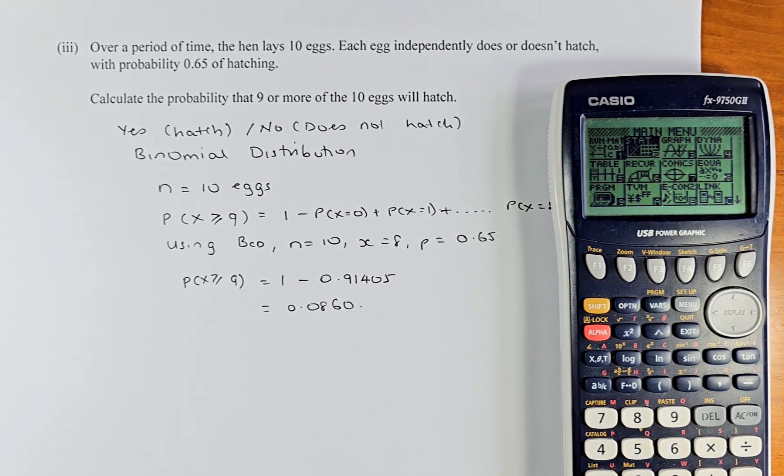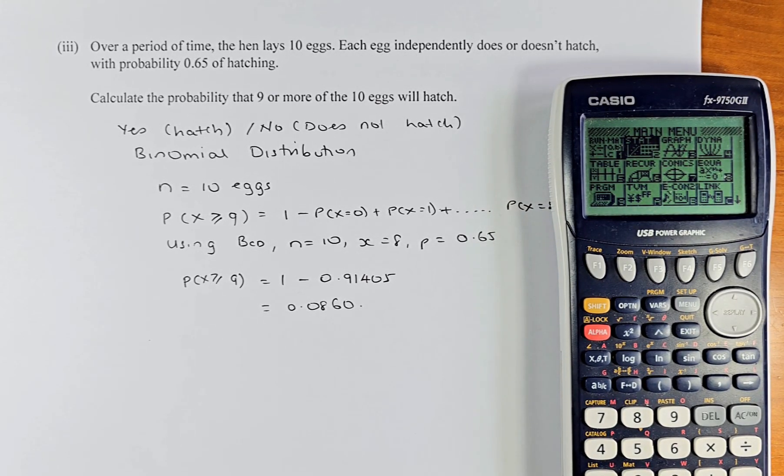Good day and in this video, we are going to do question 2A part 3 of the 2023 NCA statistics paper titled Apply Probability Distribution in Solving Problems. This is an easy question and this is an achieved question. Without further ado, let's do question 2A part 1. Over a period of time, the hen lays 10 eggs. Each egg independently does or does not hatch, with a probability of 0.65 of hatching. Calculate the probability that 9 or more eggs will hatch.